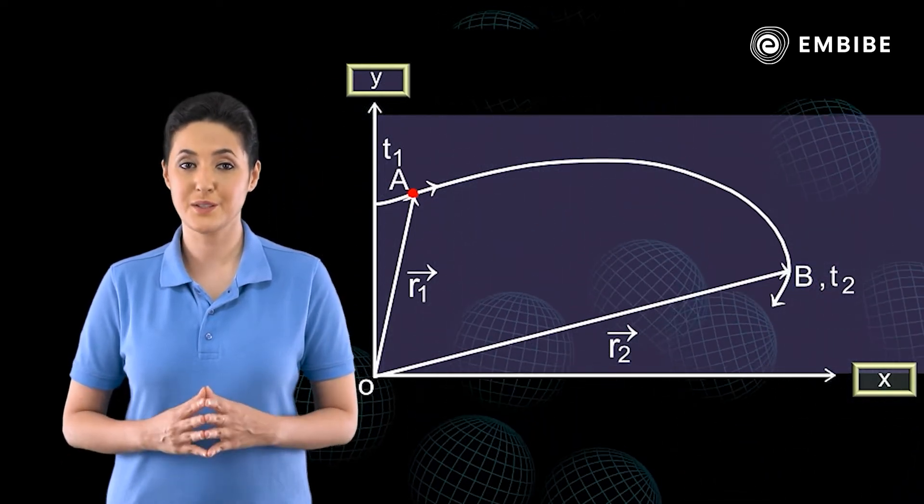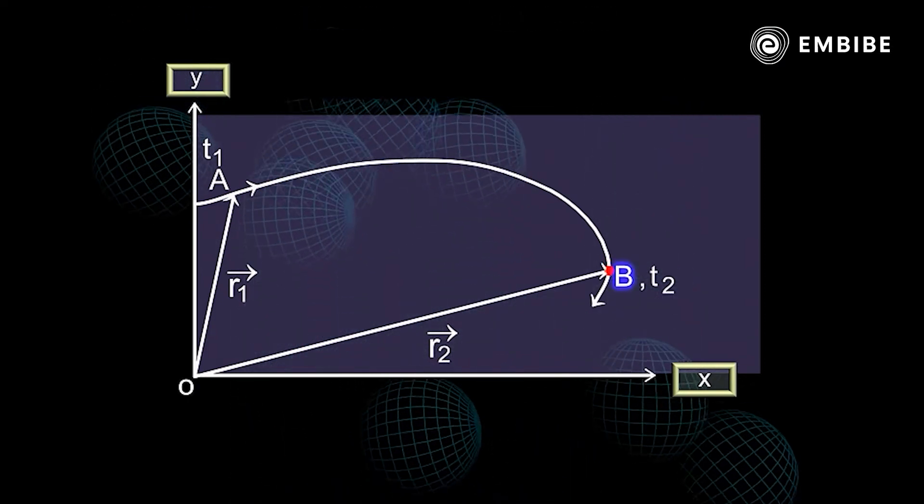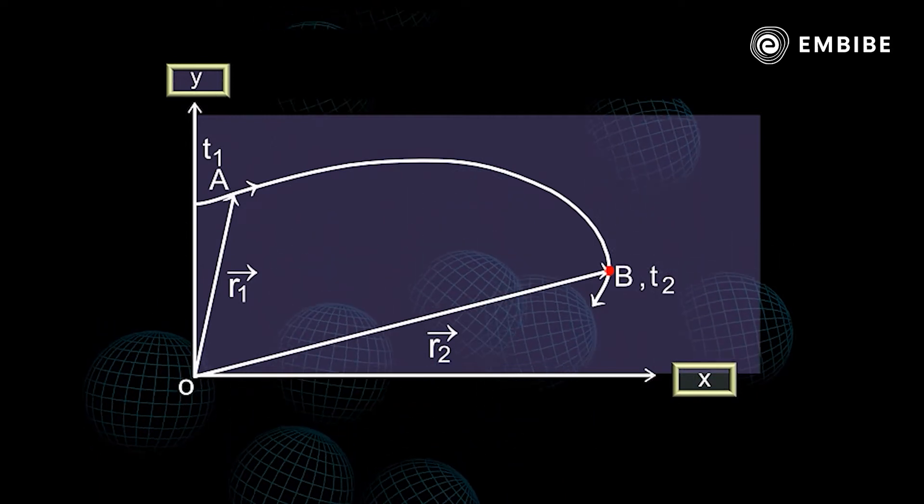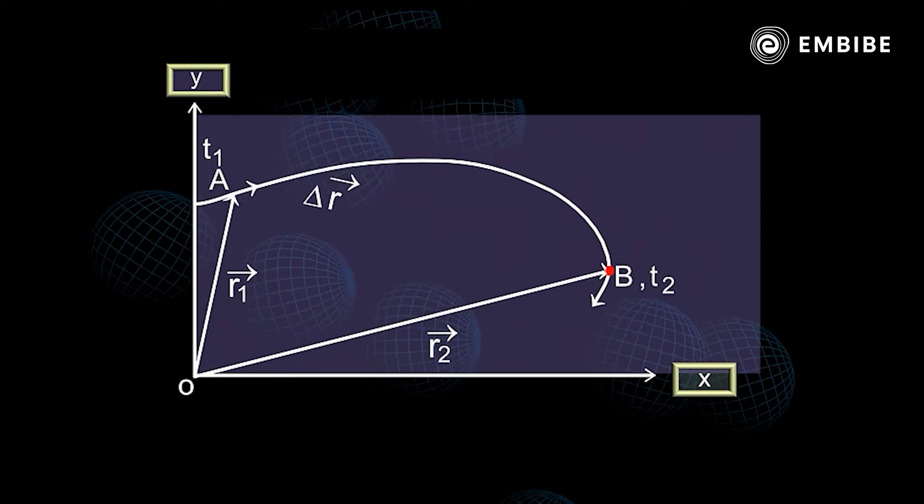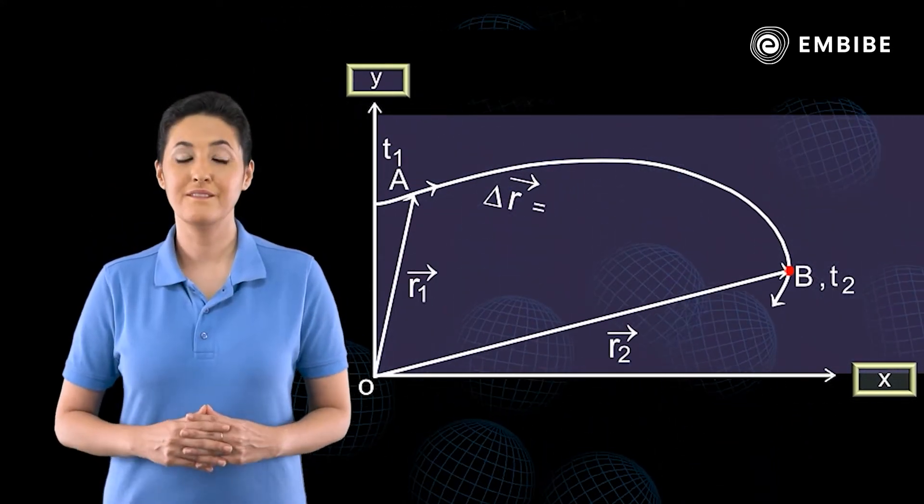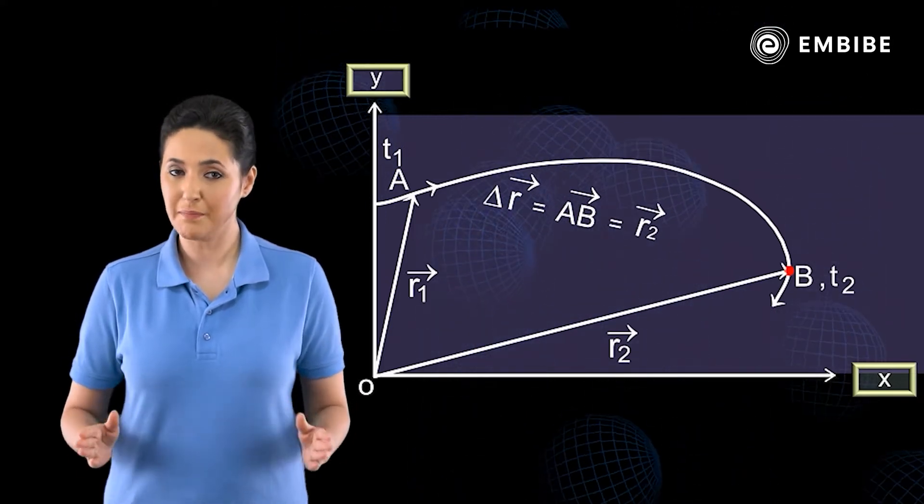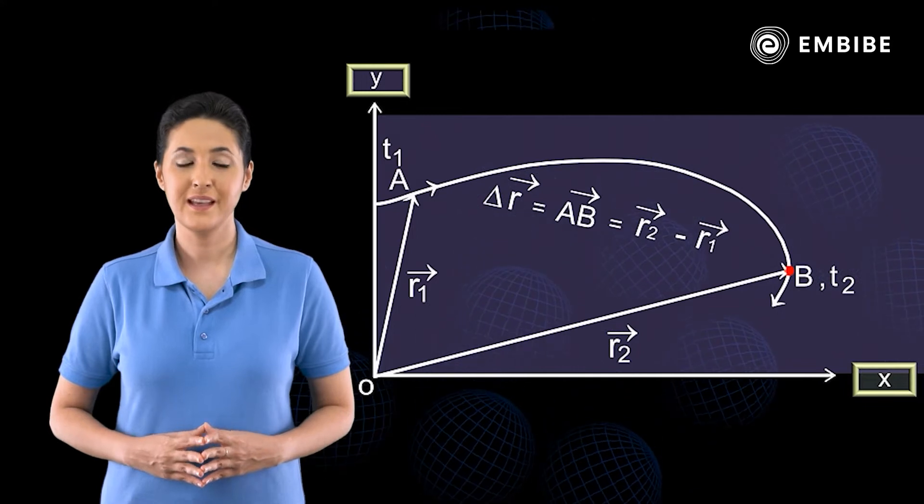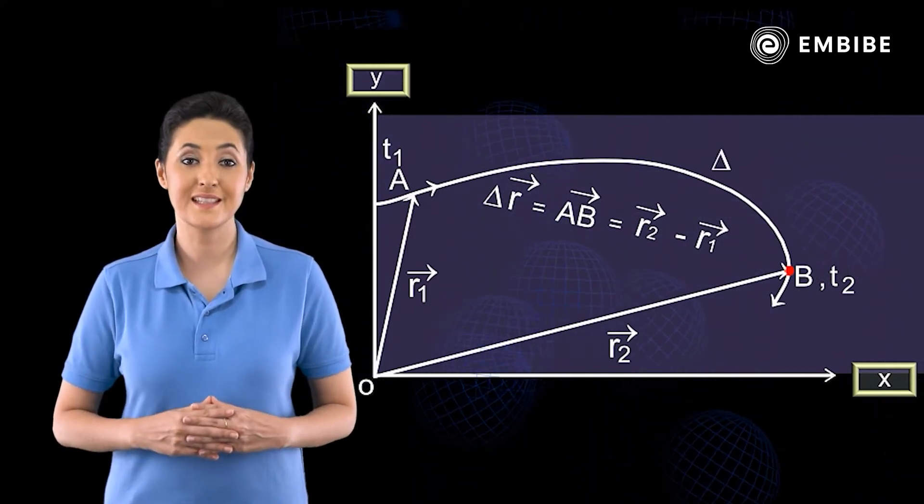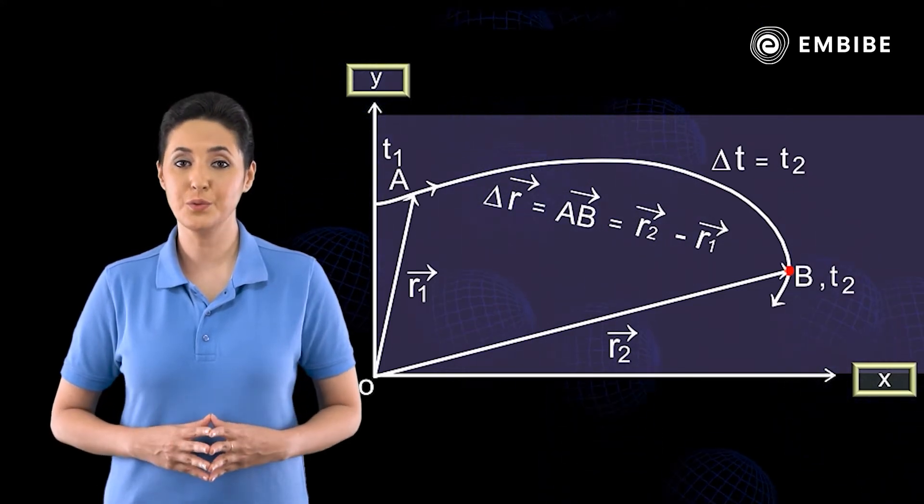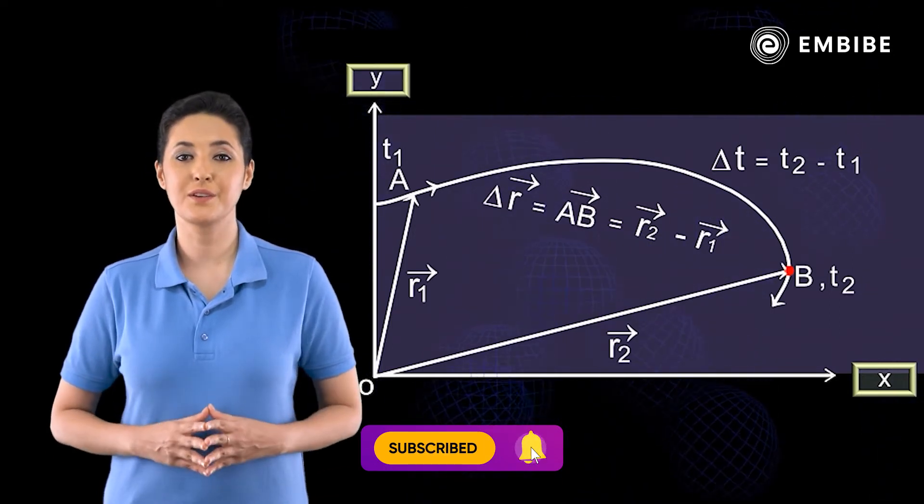When the particle moves from point A to point B, then the change in its displacement can be represented by the displacement vector delta vector r equals to vector AB equals to vector r2 minus vector r1. And the time interval for it is delta t equals t2 minus t1.